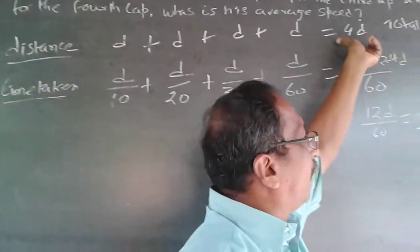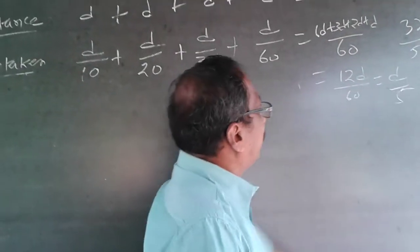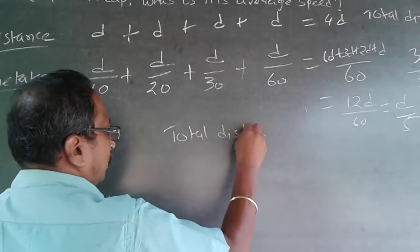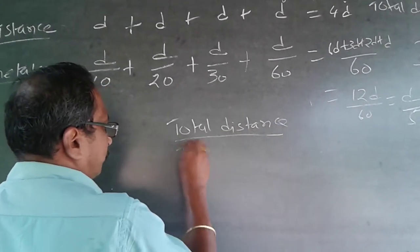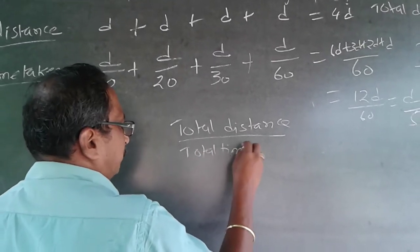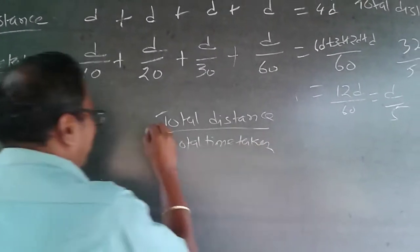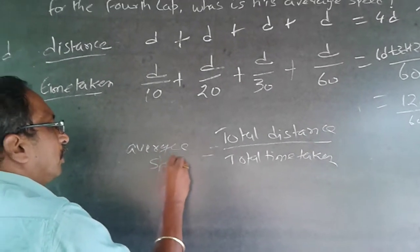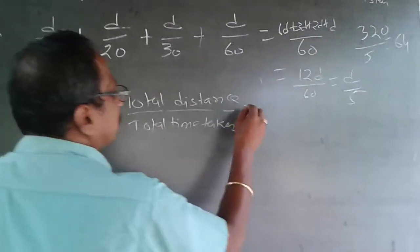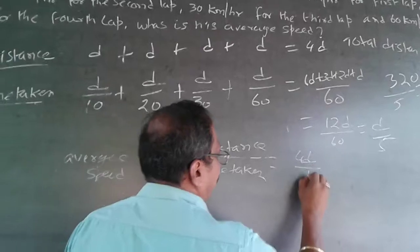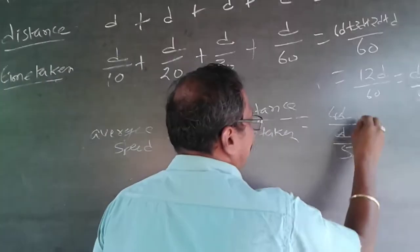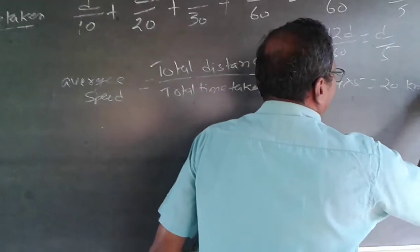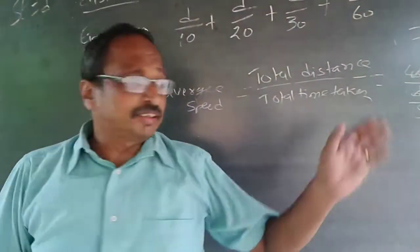Total distance = 4D, total time = D/5. Average speed = total distance ÷ total time = 4D ÷ (D/5) = 4 × 5 = 20 km/h. The average speed is 20 kilometers per hour. This is the answer.